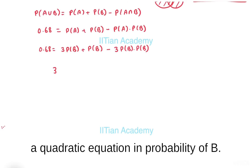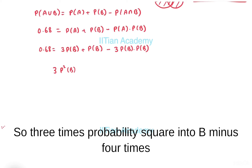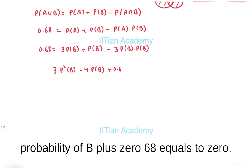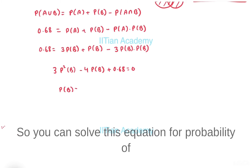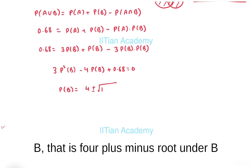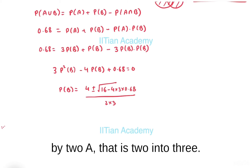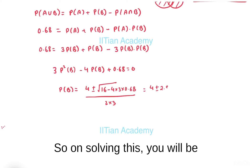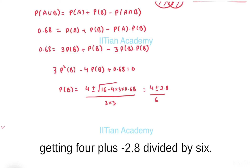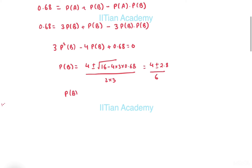We get a quadratic equation in P(B): three times P(B) squared minus four times P(B) plus 0.68 equals zero. Solving using the quadratic formula, that is four plus or minus root of (4 squared minus 4 times 3 times 0.68) divided by 2 times 3, giving four plus or minus 2.8 divided by 6.